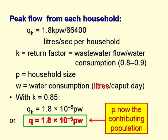So first of all we determine the peak flow from each household, QH in litres per second per household, and that is 1.8 — the peak factor — times K times PW over 86,400. K is the return factor, the wastewater flow per unit of water consumption, usually between 80 and 90 per cent, and we would use a design value of 0.85.